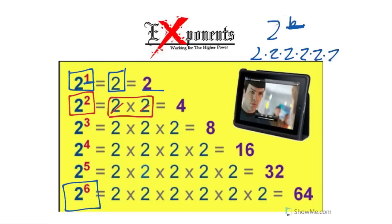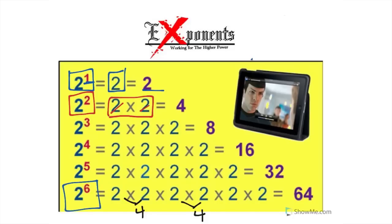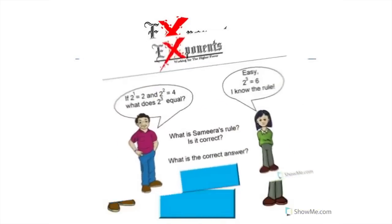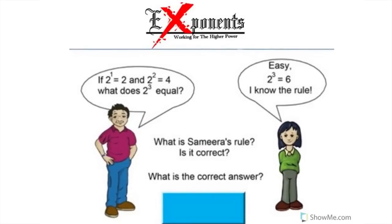To solve two to the sixth power, I'll work through it step by step. Two times two is four, two times two is four, two times two is four — that uses all six twos. Then continuing to multiply: four times four is sixteen, and sixteen times four gives me sixty-four. So two to the sixth power equals sixty-four.